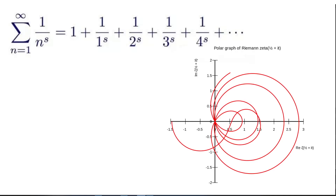This function was originally only defined for when s had a real part greater than 1. However, through a method called analytic continuation, mathematicians have been able to expand the zeta function's domain for all complex values of s. While this is another topic that definitely deserves its own video, just think of this as a method used to expand the domain of a function.